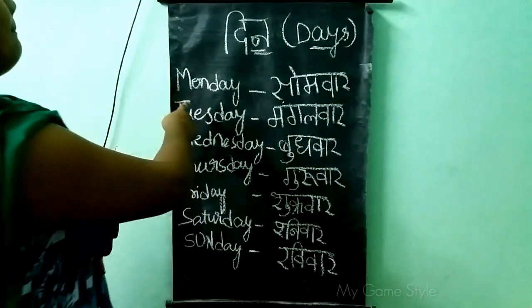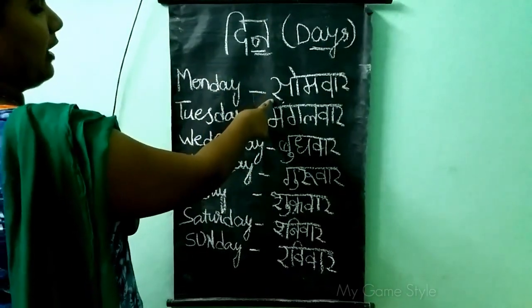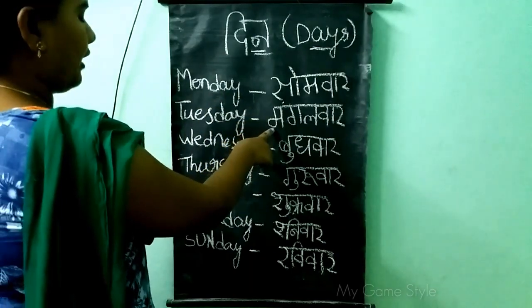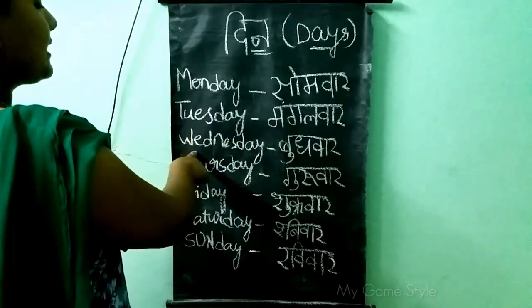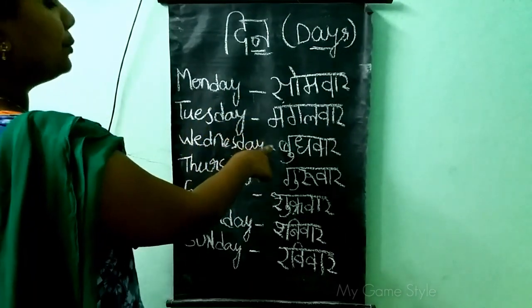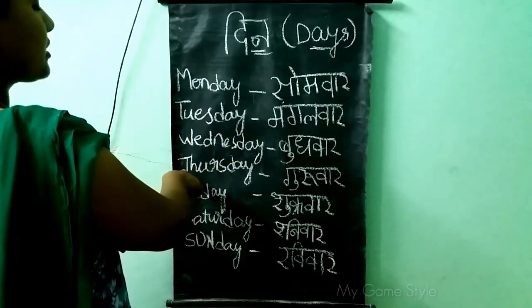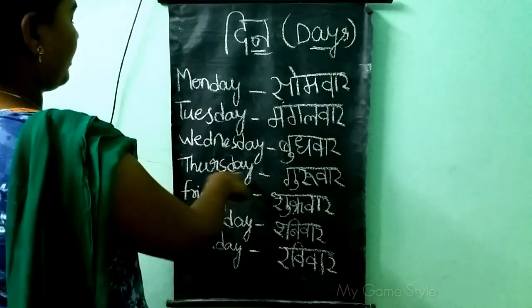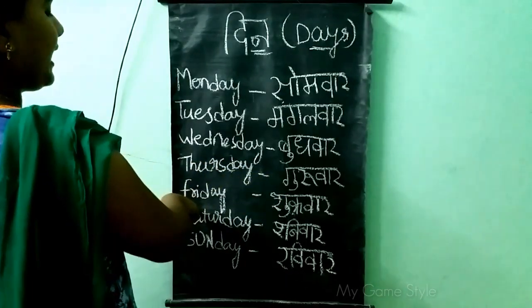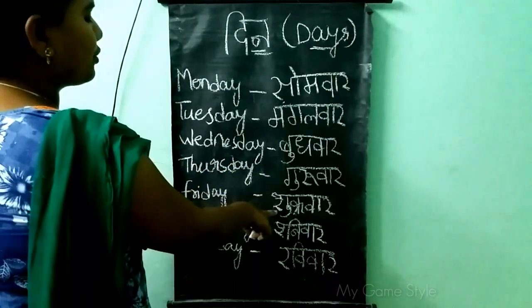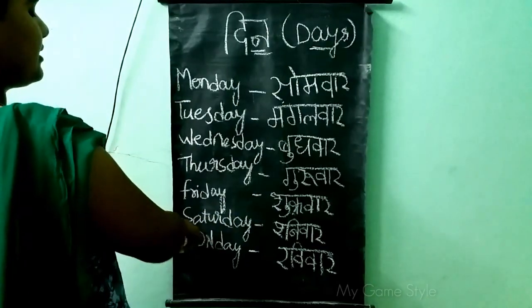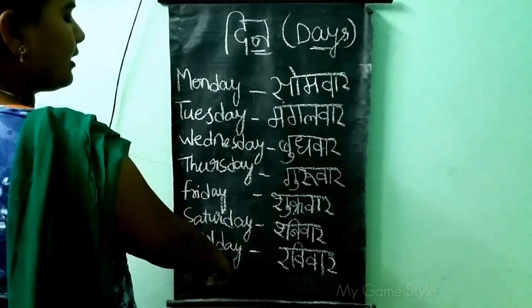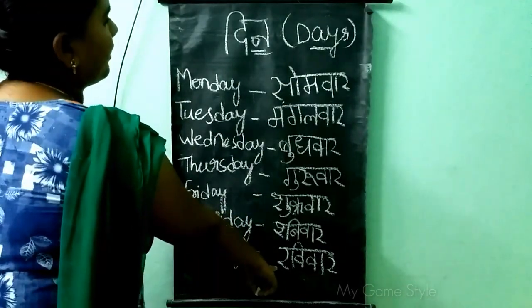Let's review: Sunday — Ravivar. Tuesday — Mangalwad. Wednesday — Budwar. Thursday — Gurwad. Friday — Shukruwar. Saturday — Shunywar. Sunday — Ravivar.